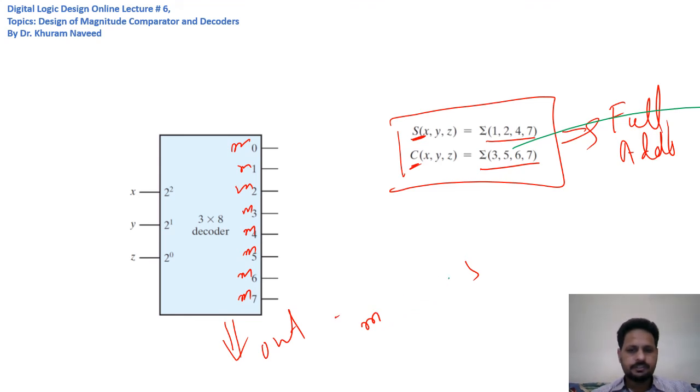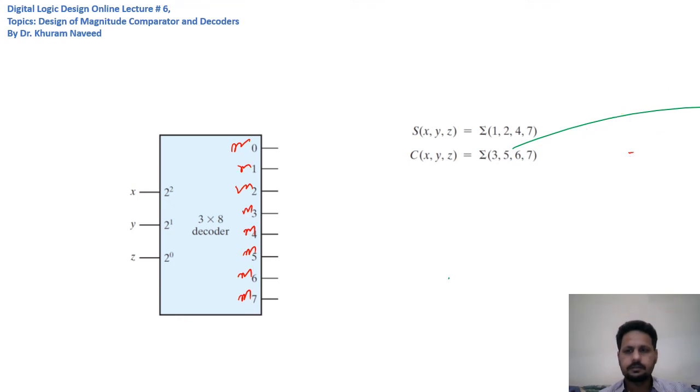using this decoder. In this case, we combine min terms 1, 2, 4, and 7 in an OR gate. Let's do that.